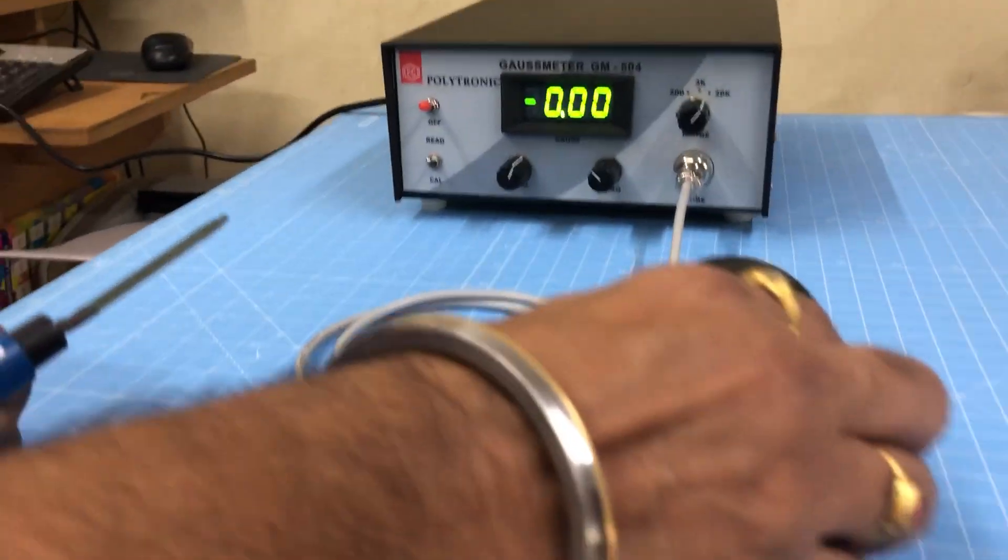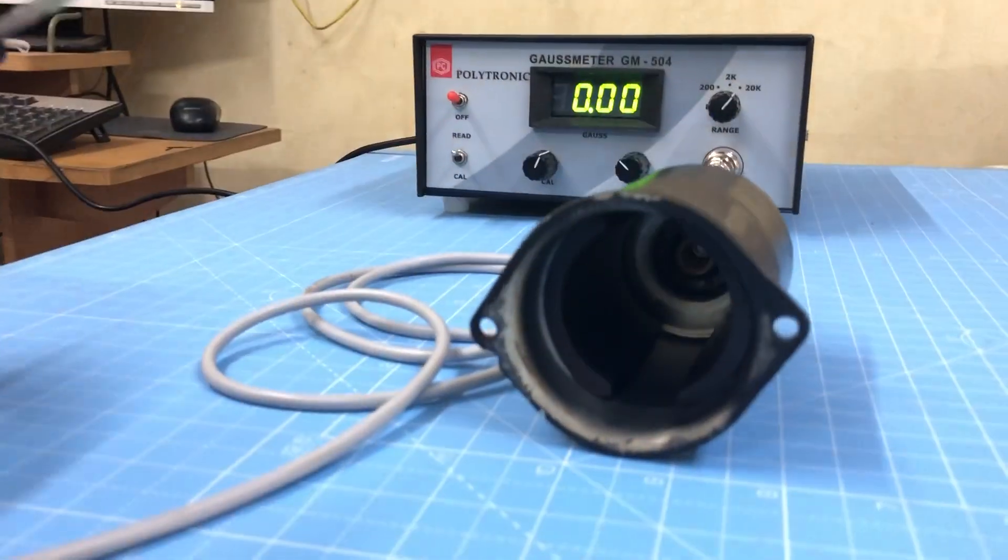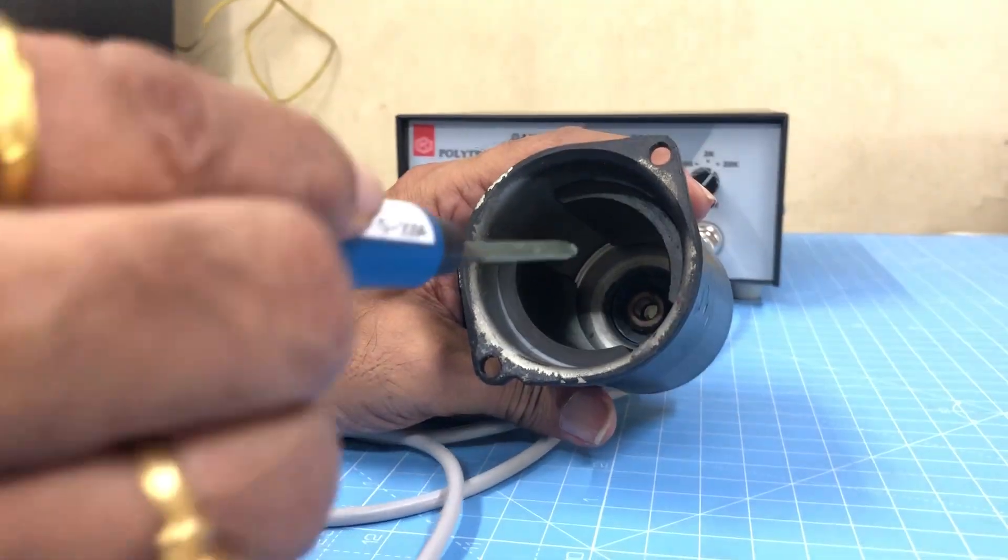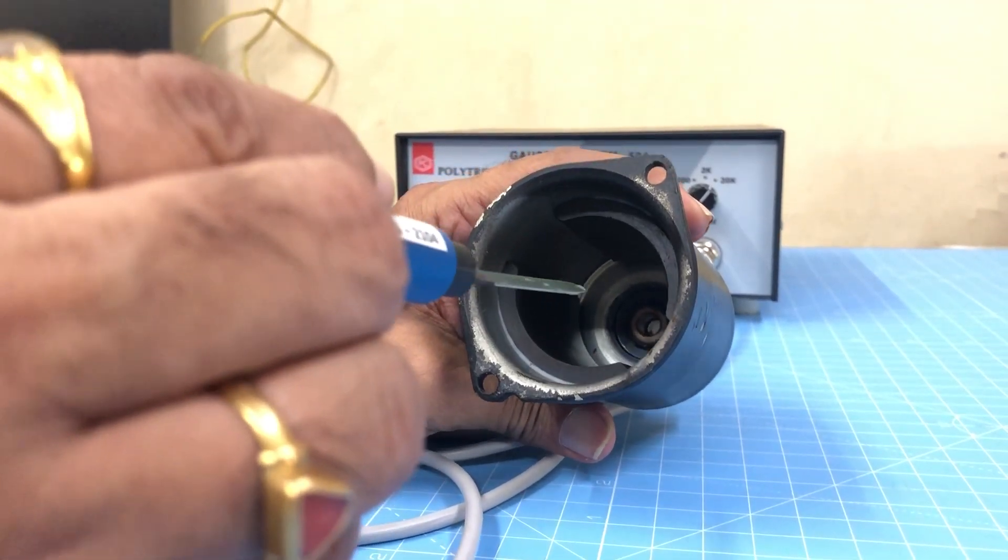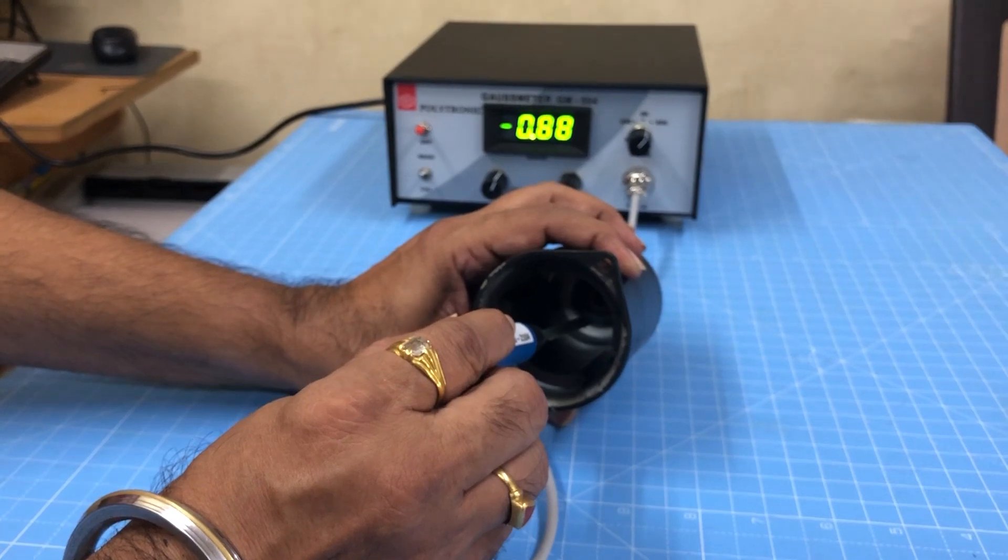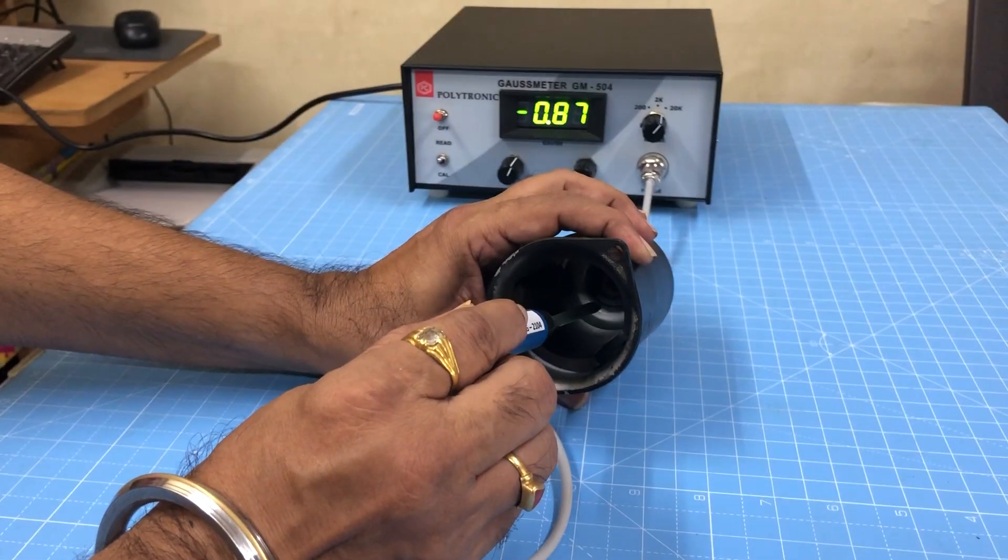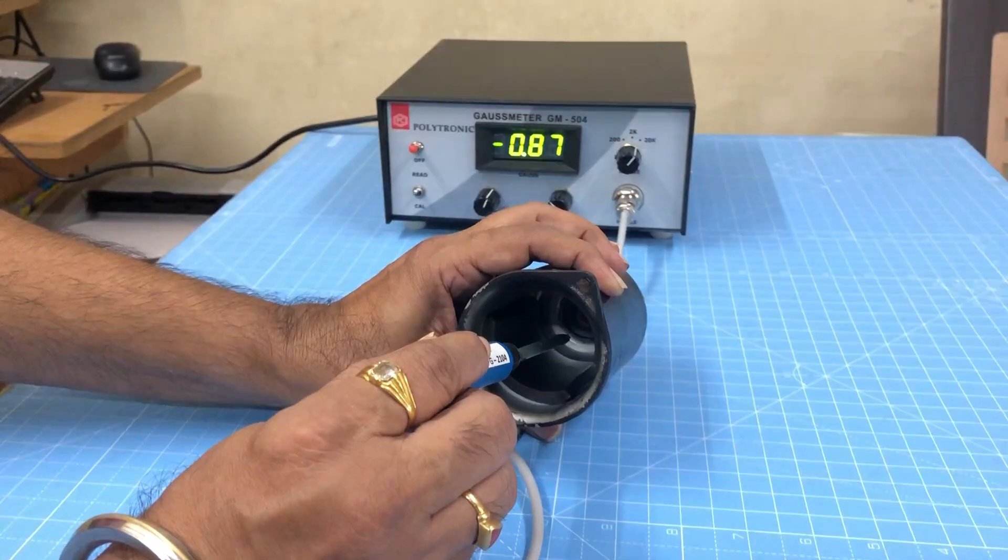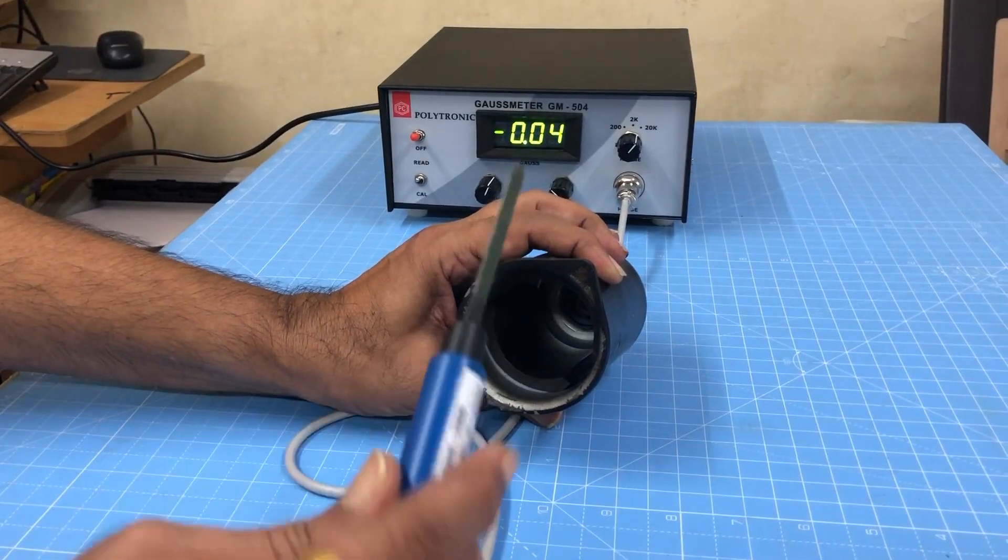Now for this permanent magnet DC motor housing, where there are two sector magnets. We measure it in between the sector magnets. It is about 860 gauss.